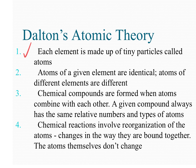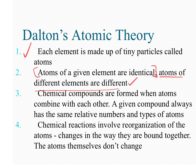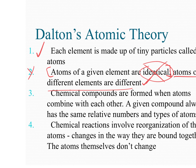His second point: atoms of a given element are identical, and atoms of different elements are different. We agree with the second part — atoms of different elements are different. But atoms of a given element being identical? We don't think that's true anymore, because of isotopes. Isotopes are two atoms of the same element that have different masses — different numbers of neutrons. So this part of Dalton's theory is no longer fully true.